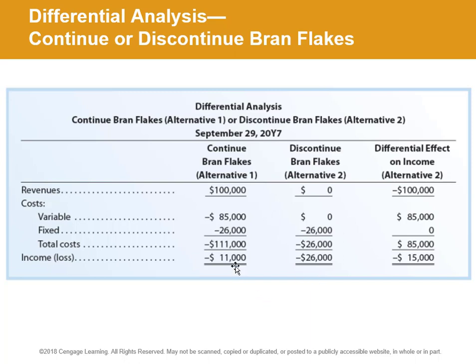That's what we've lost, and that's why the loss is that much bigger — it's the $15,000 contribution margin plus the original $11,000 loss. In the third column showing the detrimental effect, revenue is made negative because it decreases income. Variable costs go away, which actually increases income since we've lost the cost, but the net effect is a loss of $15,000.